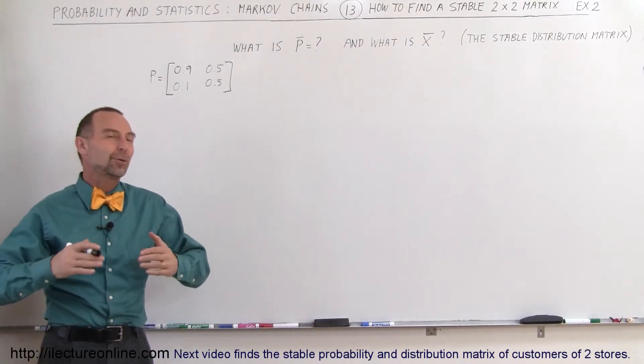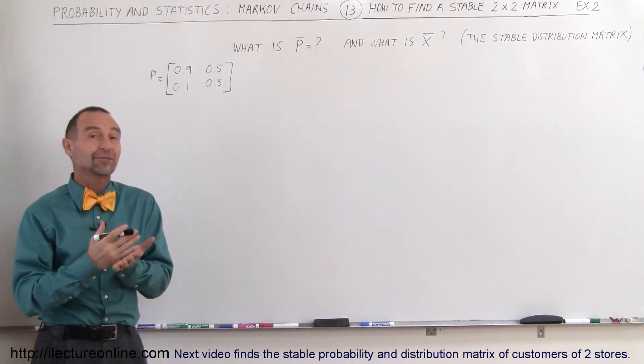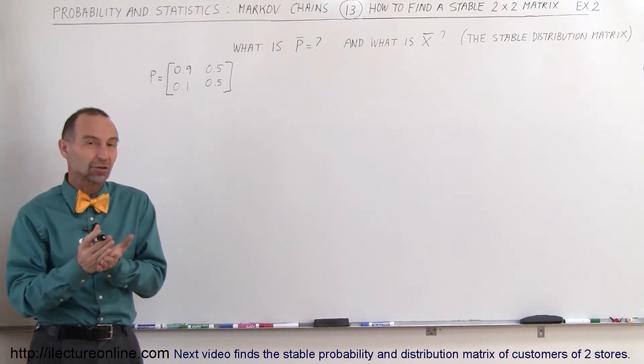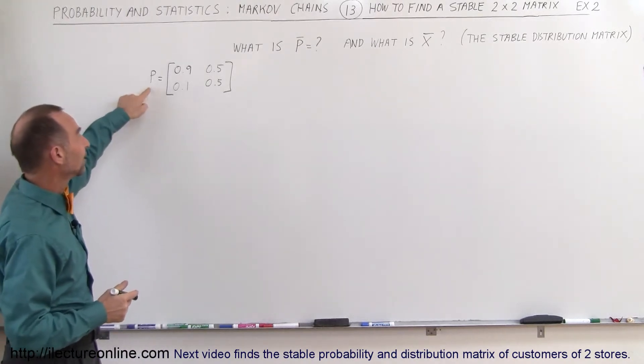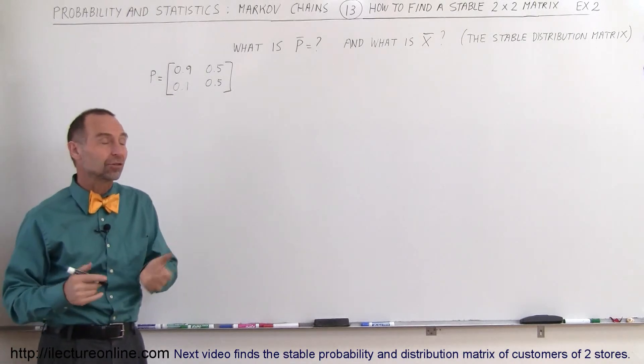Welcome to ElectronLine. In this video we're going to do another example of how to find the stable distribution matrix using a 2 by 2 matrix to begin with, and also to find the stable P matrix, the probability matrix.